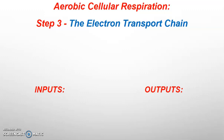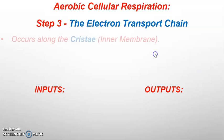Hello class and welcome to the fifth lecture video for unit five, where we finish out aerobic cellular respiration with step three, the electron transport chain. This is going to occur along the cristae, or the foldings of the inner membrane inside the mitochondria. The matrix is the center of the mitochondria, and what separates it from the intermembrane space would be the cristae.